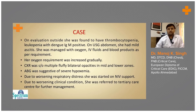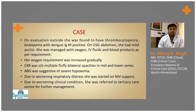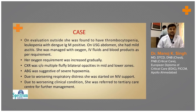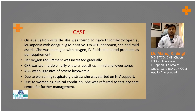She was managed with oxygen, IV fluids, and blood products as required. Her oxygen requirement was increasing gradually. Chest X-ray was suggesting bilateral fluffy opacities in the bilateral mid-zone and lower zone, and arterial blood gas analysis was suggestive of severe hypoxemia.